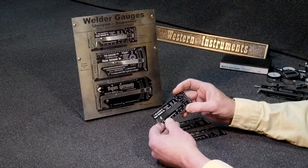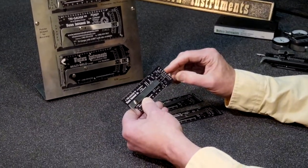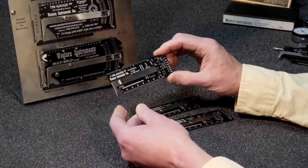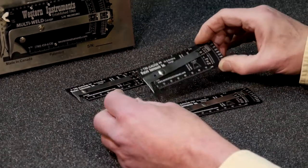Now the junior tri-gauge we call the Vm because of its five thou accuracy. We have customers who like the size of the tri-gauge but wanted increased range.